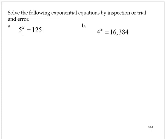So you just need to ask yourself, what value of x would make this true? 5 to what power is equal to 125? Well, I know that 5 to the first is 5, and 5 to the second is 25, and 5 to the third is 125. So therefore, x is equal to 3.